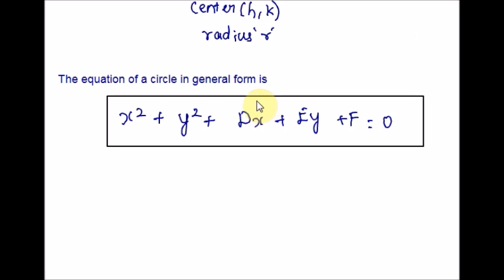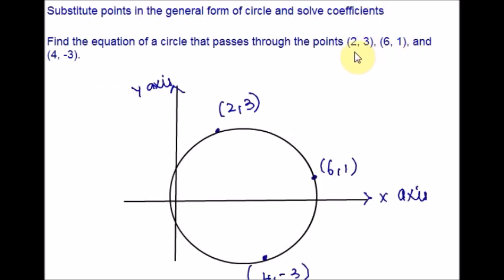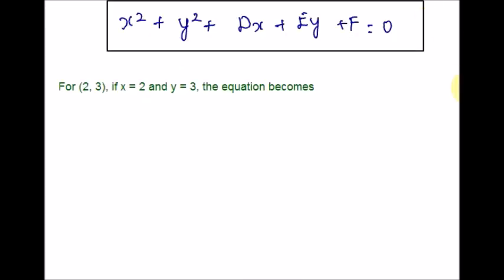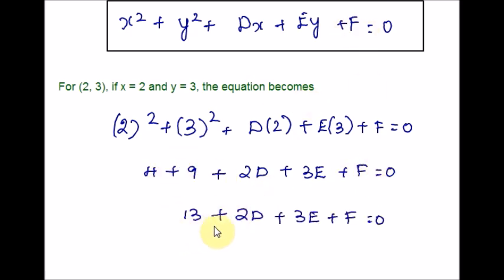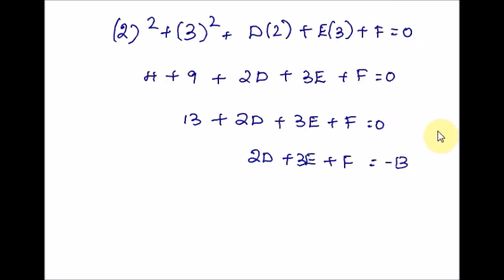First, let us plug in the given points. We have three pairs of points. We are going to plug in each pair and get three equations, then solve them. Replacing x by 2 and y by 3 in the general form, we simplify and combine like terms. Subtracting 13 from both sides to keep only the variables on the left-hand side — let this be Equation 1.